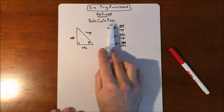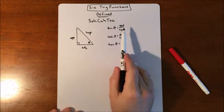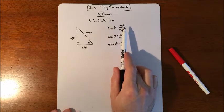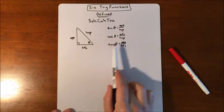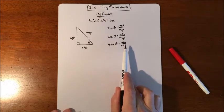You might have used the word SOHCAHTOA to help you remember that sine of an angle is opposite divided by hypotenuse, cosine of an angle is adjacent divided by hypotenuse, and tangent is opposite divided by adjacent.